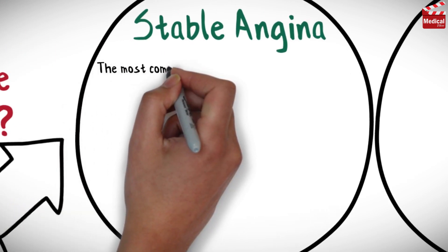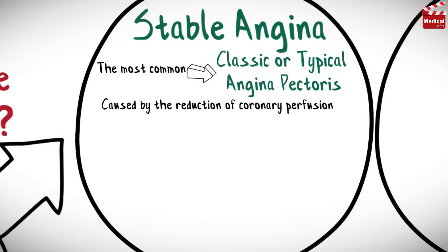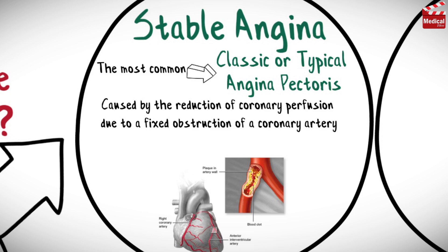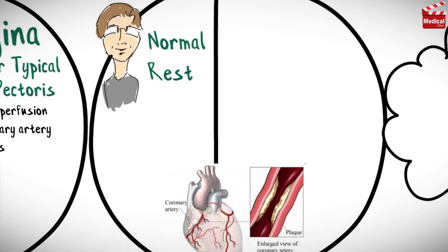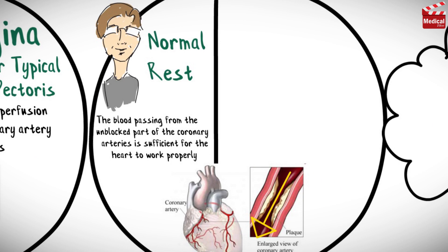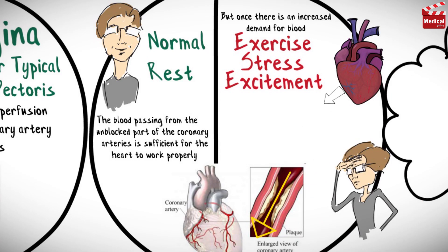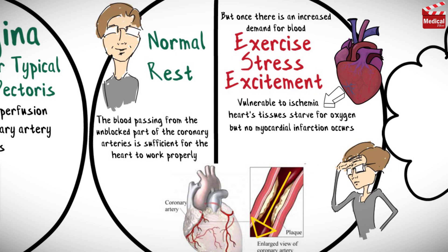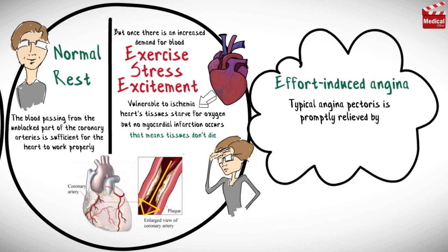Stable angina is the most common form, also called classic or typical angina pectoris. It is caused by the reduction of coronary perfusion due to a fixed obstruction of a coronary artery produced by atherosclerosis. At rest, blood passing through the unblocked portion of the coronary arteries is sufficient, but during increased demand — such as exercise, stress, or excitement — the heart becomes vulnerable to ischemia, meaning heart tissues are starved for oxygen, though no myocardial infarction occurs and tissues don't die. That's why it's also known as effort-induced angina, and it is promptly relieved by rest or nitroglycerin.